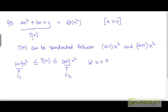Here is one more example. Suppose t is equal to a n squared plus b n plus c, where a, b and c are constants, and a is in particular a positive constant. We can claim that t is theta of n squared.